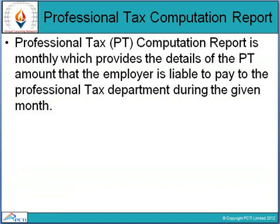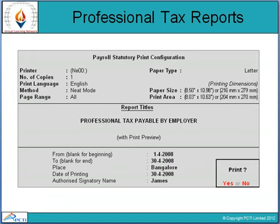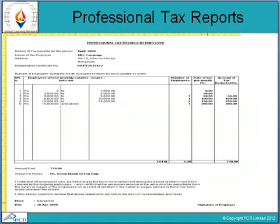The Professional Text Computing Report is a monthly report which provides detail of the PT amount that the employer is liable to pay to the Professional Tax department during the given period. The main window shows Payroll and Statutory Print configuration, and we can see month-wise how many transactions or charges were paid — for example, April 2008, ABC Company, with address, registration certificate number, and total monthly amount paid.